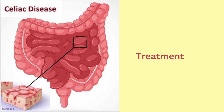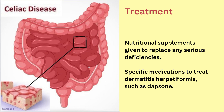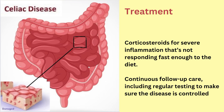Now let us discuss about the treatment. Doctors treat celiac disease by helping people to follow a gluten-free diet. When you stop eating gluten, your small intestine will begin to heal and will soon be able to absorb nutrients again. Nutritional supplements will be given to replace any serious deficiencies. Specific medications to treat dermatitis herpetiformis such as Dapsone will be given. Corticosteroids may be used for severe inflammation that's not responding fast enough to the diet. Continuous follow-up care including regular testing is done to make sure the disease is controlled.